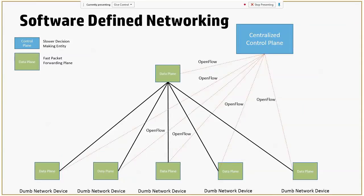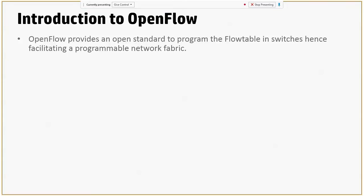So how does the centralized control plane talk to each of the data planes? This is done by something called OpenFlow, which is a protocol we will be covering in deeper depth. In software-defined networking, you have really fast routers or switches acting as just dumb network devices, and the entire centralized control plane uses OpenFlow to talk to the data planes. OpenFlow provides an open standard to program the flow table in switches, and hence facilitates a programmable networking fabric.